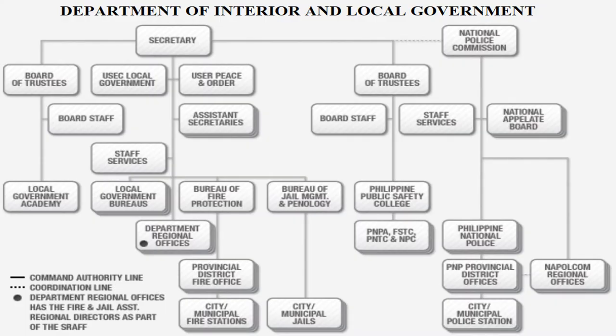Looking at the organizational structure of the Department of Interior and Local Government: below the secretary you have the local government bureaus, Bureau of Fire Protection, and Bureau of Jail Management. The Philippine National Police, while appearing lower in the graphic, is in reality somewhat autonomous compared to BFP and BJMP, which are directly approved by the DILG. The PNP is under the control and supervision of the National Police Commission, an attached agency to the DILG.